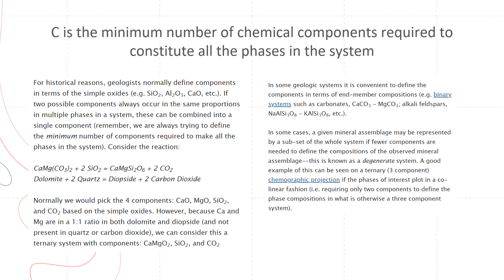When we talk about C, it refers to the minimum number of chemical components required to constitute the phases in the system. In geology, we usually talk about components in terms of their simple oxides — SiO2, Al2O3, CaO, etc. You can also talk about it in terms of end-member compositions, such as carbonates like CaCO3, MgCO3, feldspars, etc.